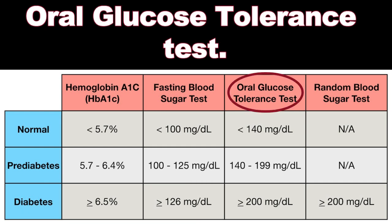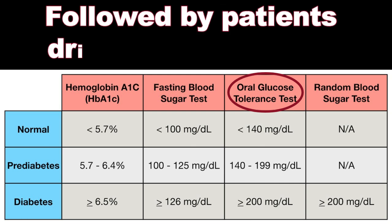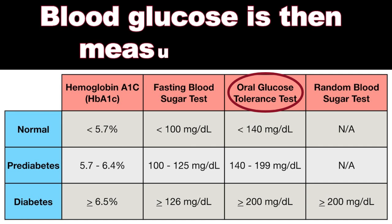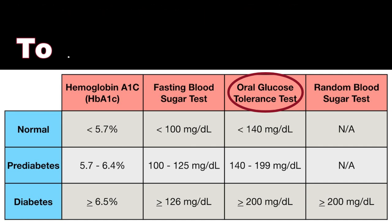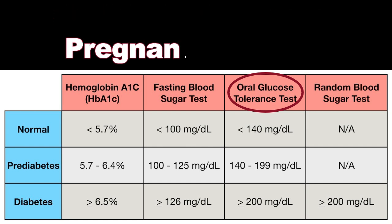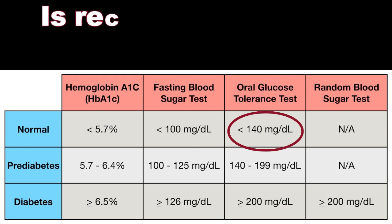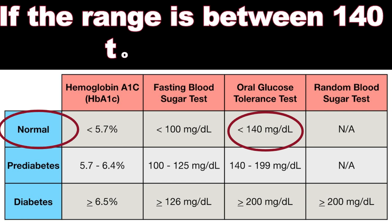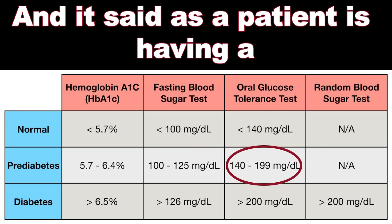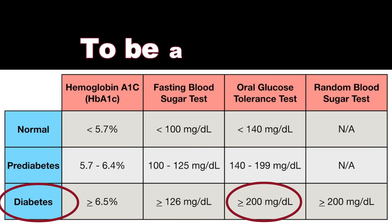The oral glucose tolerance test involves taking a fasting blood glucose level first, followed by the patient drinking a beverage containing 75 mg of glucose. Blood glucose is then measured again 2 hours after drinking the sugary beverage to analyze how blood sugar has changed. This test is more commonly used for pregnant patients. A 2-hour glucose level of less than 140 mg/dL is normal, 140 to 199 mg/dL indicates prediabetes, and more than 200 mg/dL indicates diabetes.